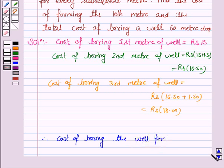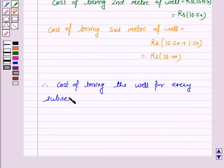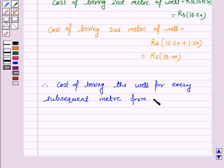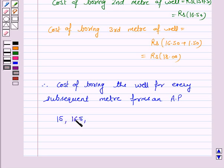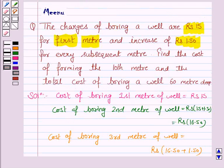Therefore, the cost of boring forms an AP, that is arithmetic progression, where the first term is 15.00, because the cost of boring the first meter is rupees 15. The cost of boring the second meter is 16.50, the third meter is 18, the fourth meter will be 19.50, and so on. Now we have to find the cost of forming the 10th meter of the well.